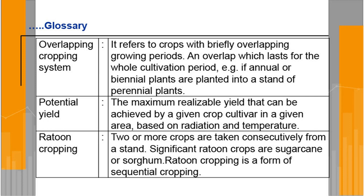This is also called utera cultivation in some places. For example, in Madhya Pradesh, Odisha, Chhattisgarh and some other parts, before harvesting the rice, farmers broadcast seed of lentil or other pulses or oilseeds like linseed. After 10–15 days the rice is harvested, and by that time the legume or oilseed crop that was broadcast gets well established in the field.